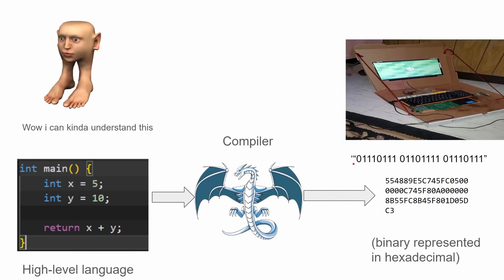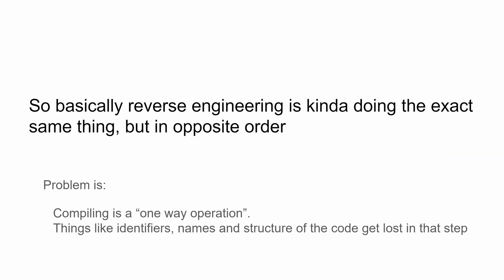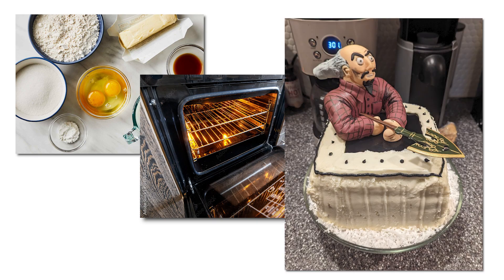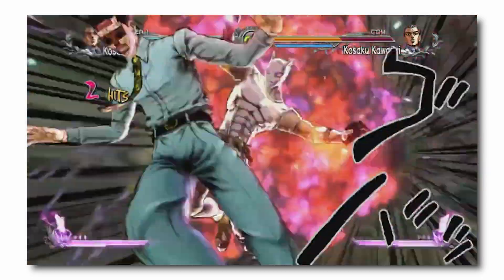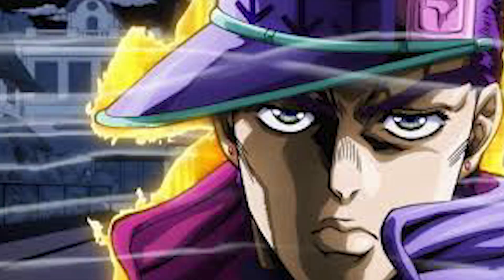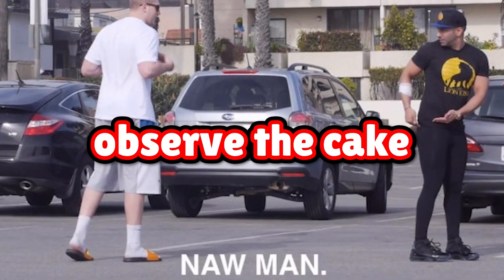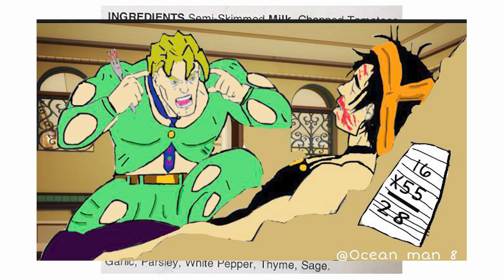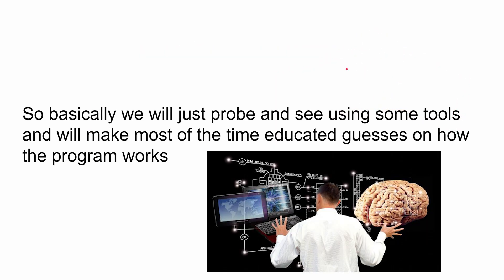The computer very much enjoys the code it has been given. Basically, reverse engineering is doing this exact same thing but in opposite order. The problem is the compilation step is a one-way operation. You can think of it like baking a cake — you have some ingredients, put them in your oven, the oven bakes them, and you have a cake. That's why you can't uncompile code. You can't just put it into a reverse oven and get the ingredients back — it doesn't work like that. But what you can do is eat the cake, observe it, look at the ingredients, and figure out how it could have been made. So basically, what we're doing here is probing the program using some tools and making educated guesses on how it works.